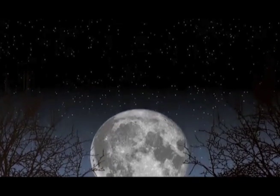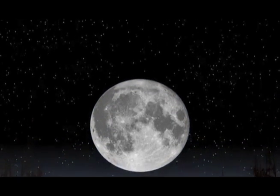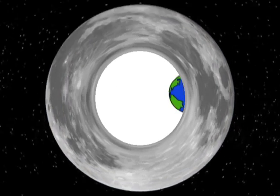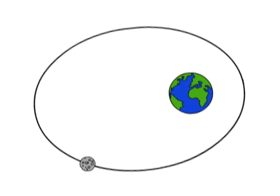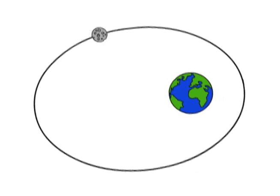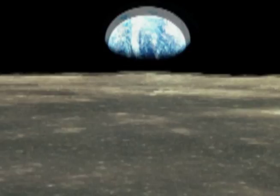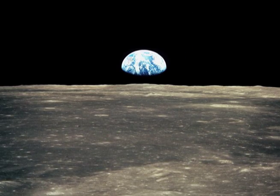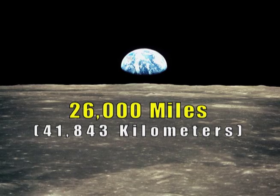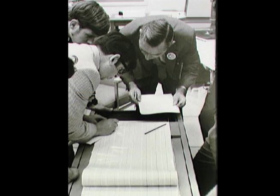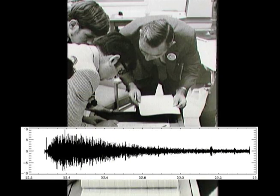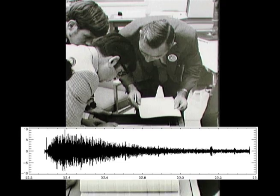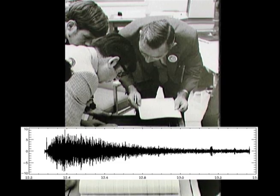Did you know that the distance between Earth and the moon changes constantly? That's because the moon does not orbit Earth in a perfect circle, but instead travels in a slightly elliptical orbit. The moon's distance from Earth varies as much as 26,000 miles, and this contributes to the stresses associated with moonquakes. Now you know.